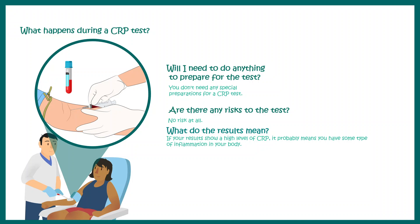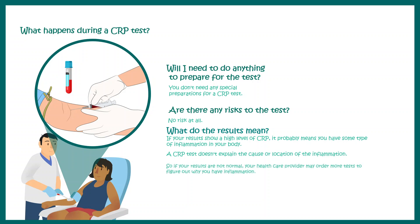How do you interpret the test results? There is a normal biological range provided for CRP, and a level higher than that range means there is some kind of inflammation in your body. Importantly, a CRP test does not explain the cause or location of inflammation — it is just a screening test that tells us whether inflammation is present. Further tests such as a complete blood count or ESR test are required to reach a conclusive diagnosis. CRP is just a quick screening method.